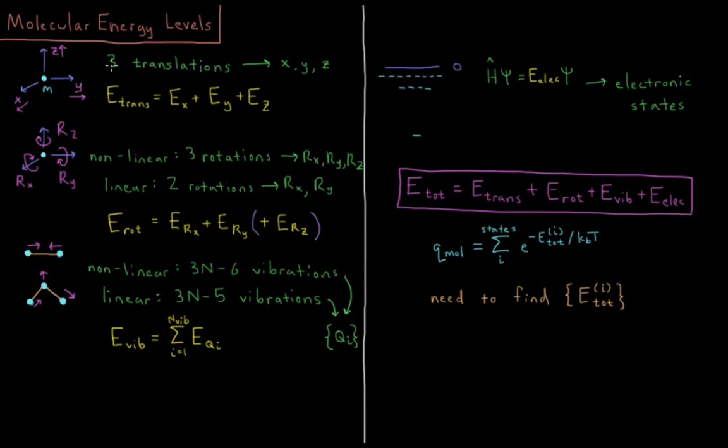First of all, for all atoms and molecules you're going to have translational energy. For all atoms and molecules they exist in three dimensional Cartesian space, so they can displace their position in X, in Y, and in Z, all mutually orthogonal directions. So there are going to be three translations.